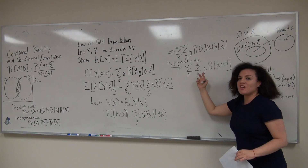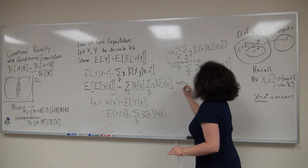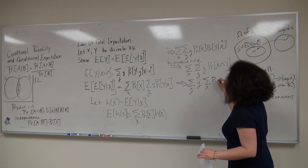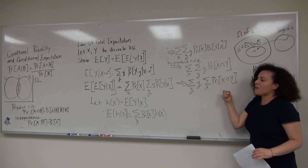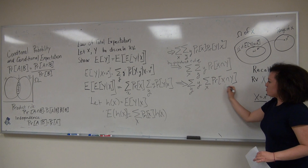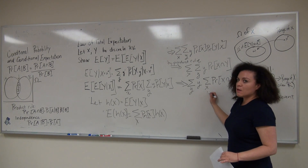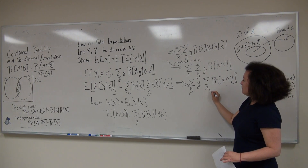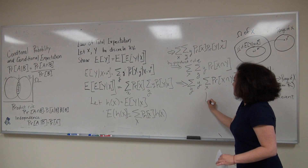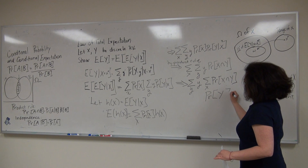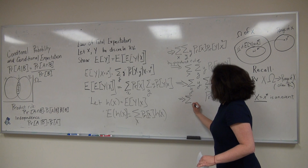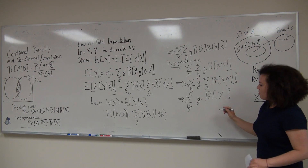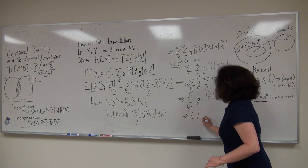If we pull out y and exchange the summation again, we get the summation over all y of y times the summation over all X of the probability of X and Y. Here we're looking at the joint distribution of X and Y. When we sum the joint distribution over all possible values of X, this is marginalization — the law of total probability — and what we're left with is simply the probability of Y. Then we have the summation over all values of y times the probability of Y, which by definition is the expectation of Y.